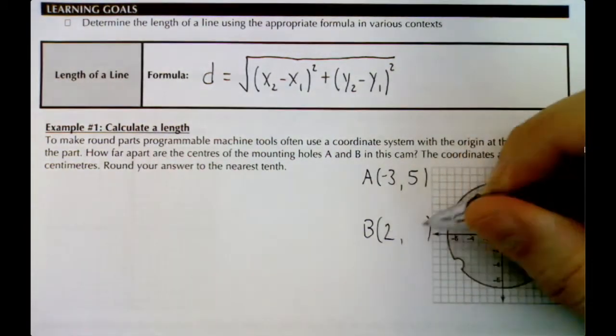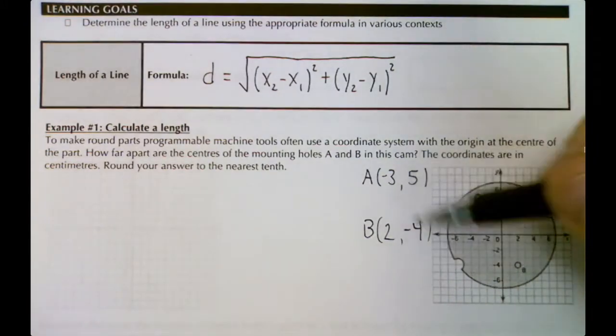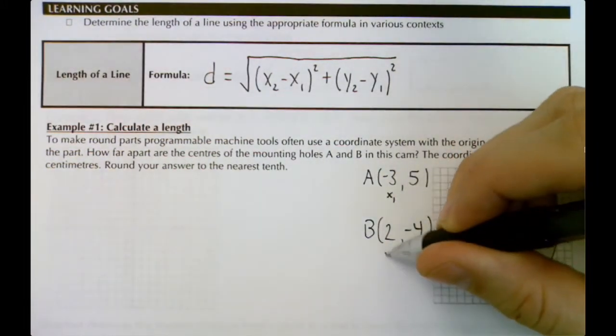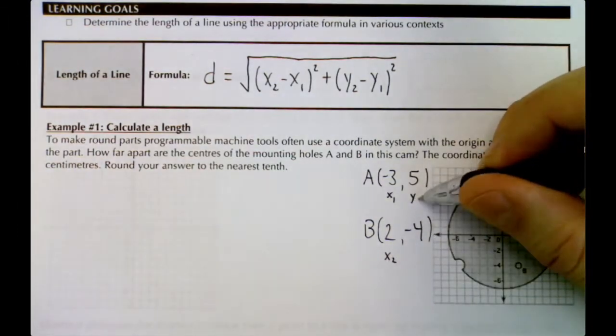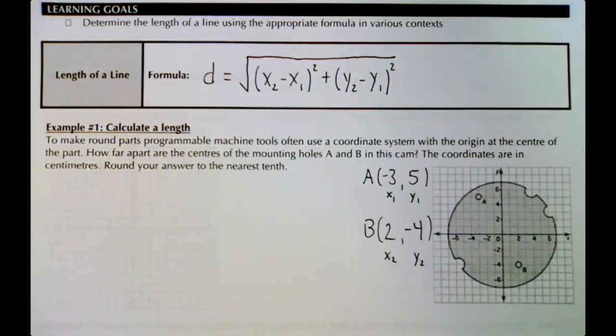If we read the coordinates off, we've got -3 for x and 5 for y for mounting hole A, and mounting hole B has x = 2 and y = -4. The x₂, x₁, y₂, y₁ are very much like in the slope formula. We can pick either of these points as our first point.